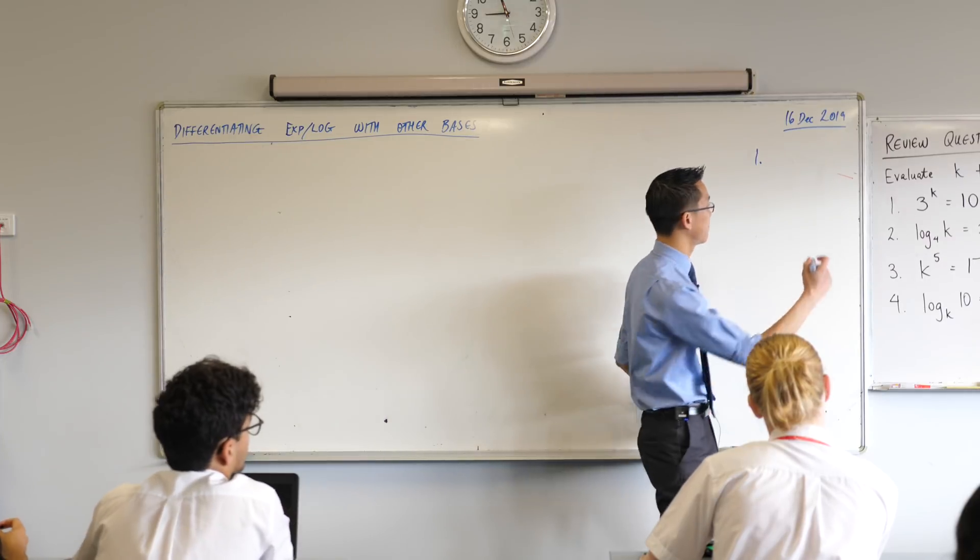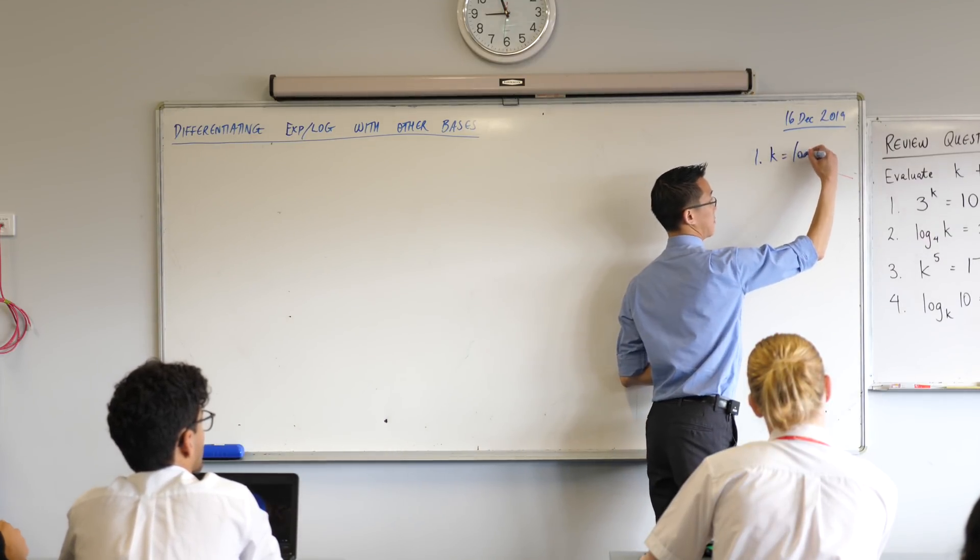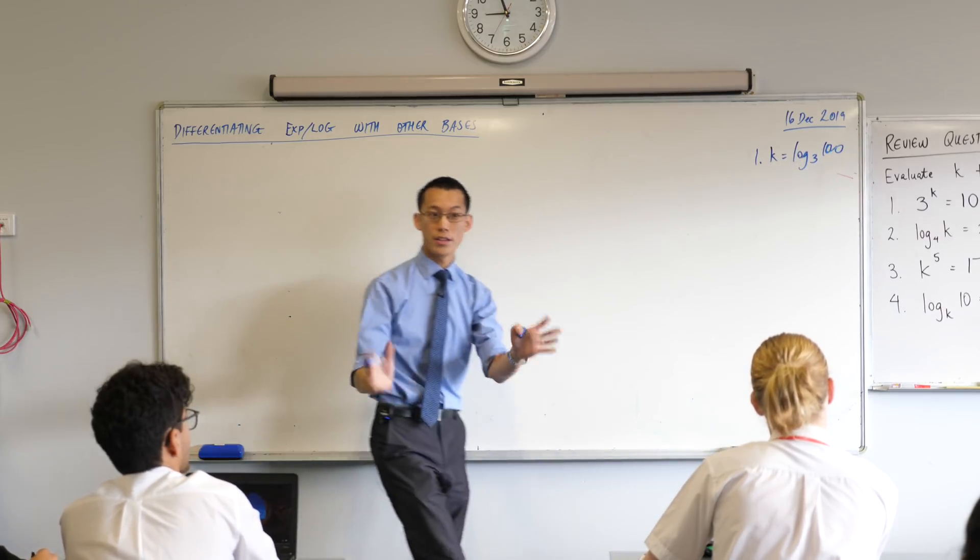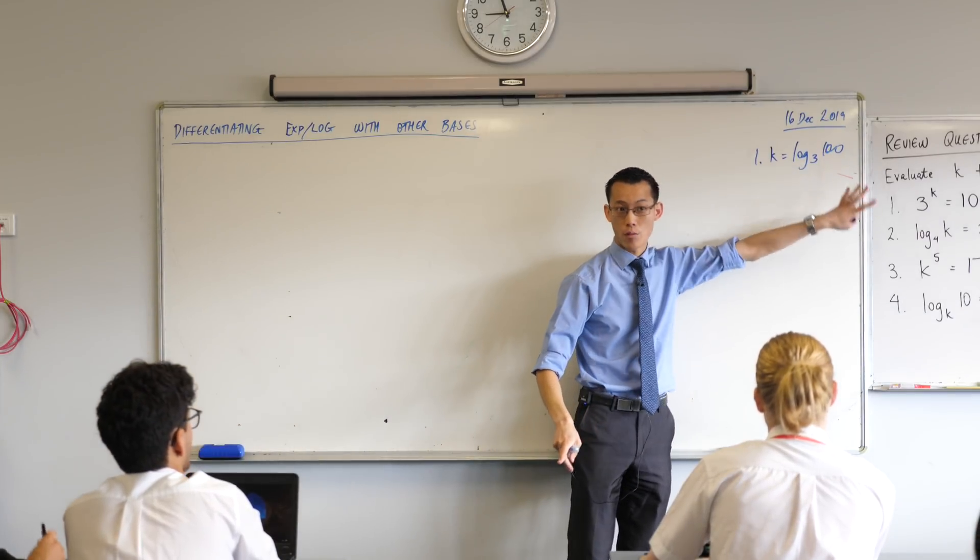Yeah, go ahead Sreng. K equals log base 3 of 100. Cool. There you go, nailed it. So what we've done is same numbers k, 3, 100, we just rearranged it and Sreng put them all in exactly the right spots.